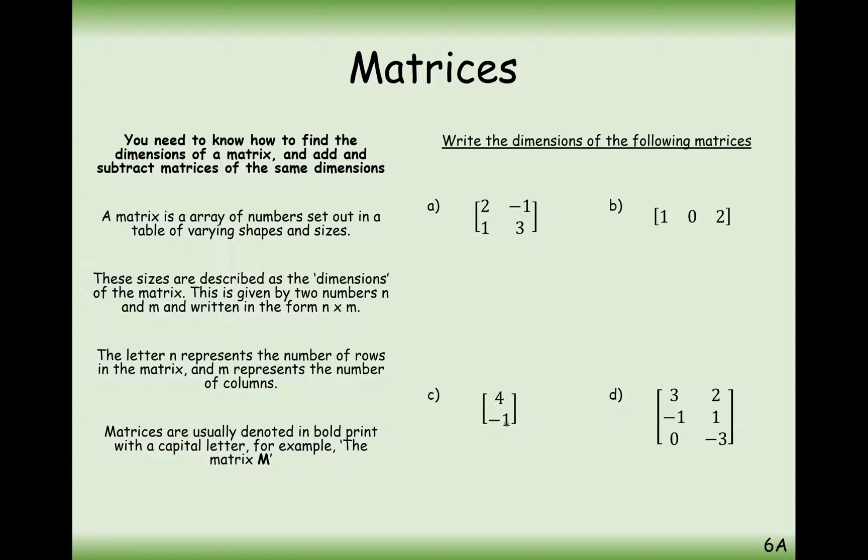Now the first bit of information you need to know about these matrices is how we describe the size or the dimensions of the matrix. The way that we describe the dimensions is we first look at how many rows there are in the matrix and then how many columns there are. We generally give capital letters to these matrices rather than small letters when we use them in algebra. So for the first matrix here, the size is going to be a 2 because it has two rows and it has two columns, so we say this matrix is a 2 by 2 matrix.